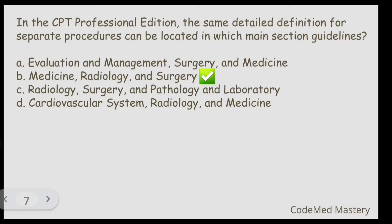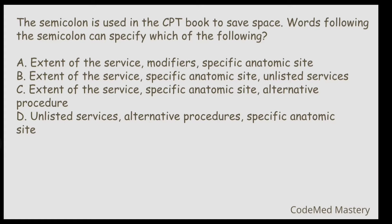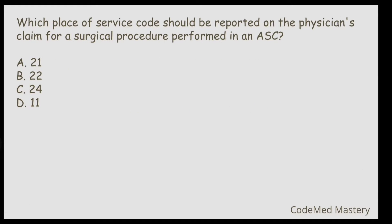Next question: The semicolon is used in the CPT book to save space. Words following the semicolon can specify which of the following? Option A: extent of the service, modifier, specific anatomic site. Option B: extent of service, specific anatomic site, unlisted services. Option C: extent of the service, specific anatomic site, alternative procedure. Option D: unlisted services, alternative procedures, specific anatomic site. The right answer is option C — extent of the service, specific anatomic site, and alternative procedure.